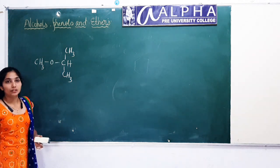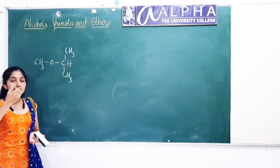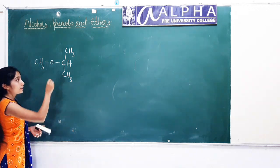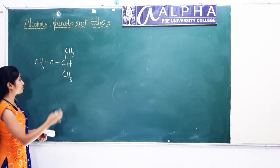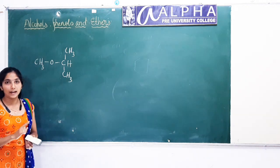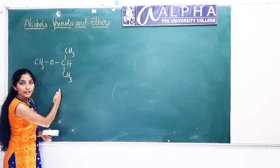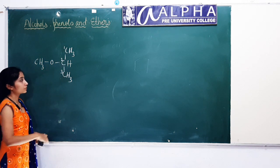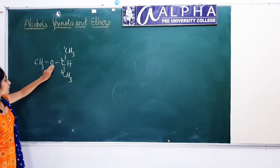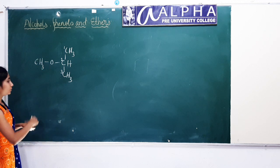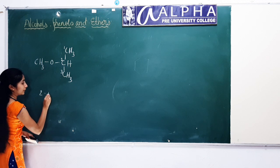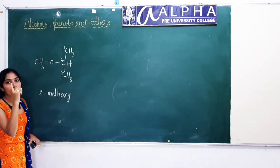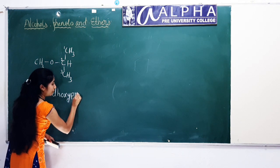First, consider the parent chain — the chain which contains the more number of carbon atoms is the parent chain. Here, one chain contains 3 carbon atoms and the other side has only 1 carbon atom. So the 3-carbon chain is considered the parent chain. Number this chain 1, 2, 3. At the second position, the methoxy group is attached. So its IUPAC name is 2-methoxypropane.